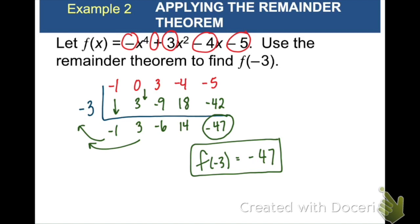You can always check to make sure you're right by just plugging negative 3 into f. When we do that and we evaluate this in our calculator, we see that negative 47 is the correct answer. Again, though, on the test, on the homework, you're expected to use synthetic division. Just doing it the way I did in blue right here will not get you credit.